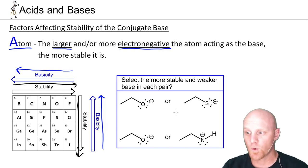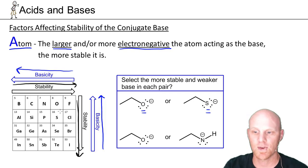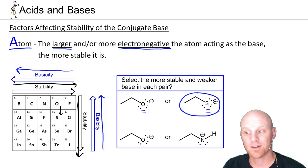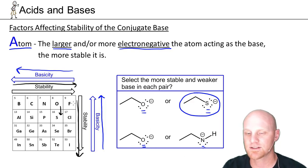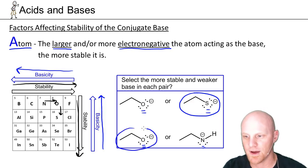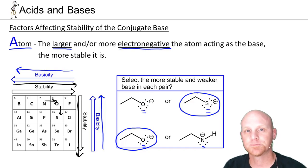Let's apply the atom rule. Comparing a base with oxygen versus one with sulfur: sulfur is lower on the periodic table, so the sulfur-based base is the more stable and weaker base, while the oxygen-based one is the less stable and stronger base. Next, comparing a base with oxygen versus one with nitrogen: since oxygen is more electronegative than nitrogen, the oxygen-based base is more stable and weaker. Nitrogen would therefore be the less stable and stronger base.